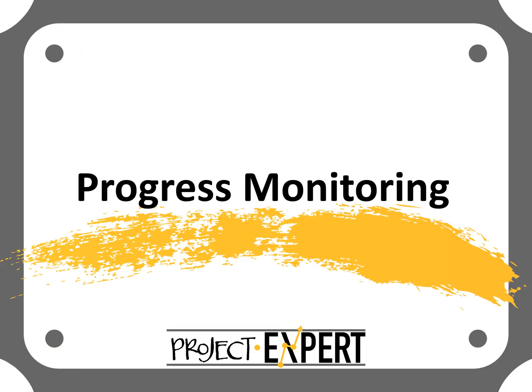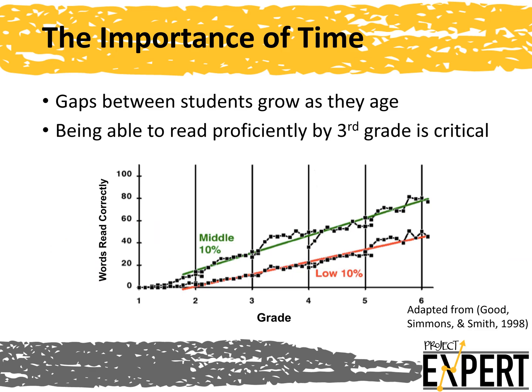CBM is a type of progress monitoring, so let's begin by reviewing how and why we use progress monitoring. Why do we monitor progress? Because time is of the essence. The Matthew Effect is a phenomenon of the rich getting richer and the poor getting poorer. In reading, this describes how students who achieve on grade level grow at rates that outpace their peers who need supplemental support. Our job as educators is to interrupt this cycle and provide strong instruction that helps our students in need grow faster than their peers in order to catch up. We also know that being able to read proficiently by grade three is a critical marker for future success.